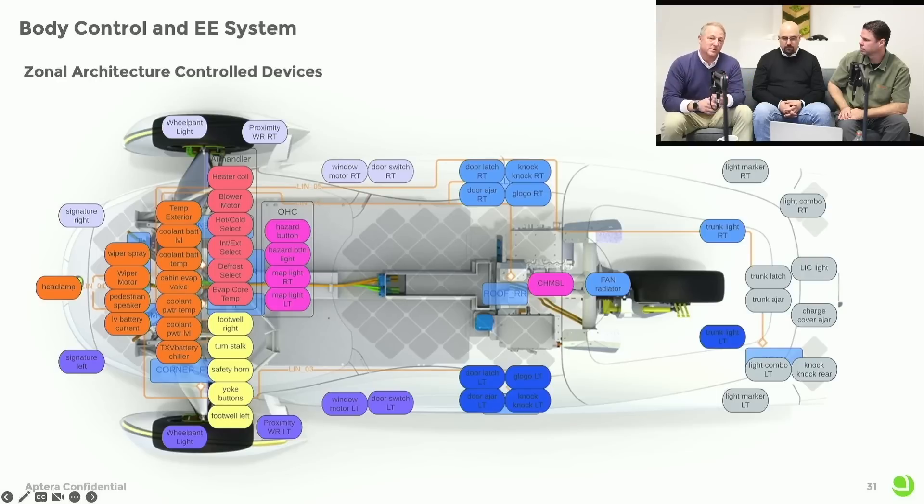But it's all connected with LIN bus. It's much cheaper than CAN bus and it's lighter weight, because instead of four wires we only need three. And this actually shows all the things that those point-of-use controllers control.